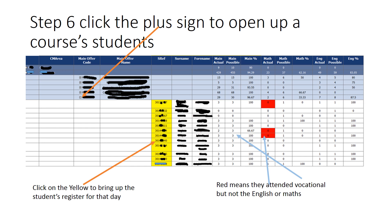Unless statistics are being skewed — for example, there are 40 attendance marks on the vocational course but only five on maths and English, and it happens those few were the absent students — mainly attendance should be only a little bit lower, not significantly lower. If you look at a course and see that maths and English attendance is significantly lower than the main qualification, you've probably got an issue. Click open on that course and the students will open up, showing individual attendance on their main provision and their maths and English course.